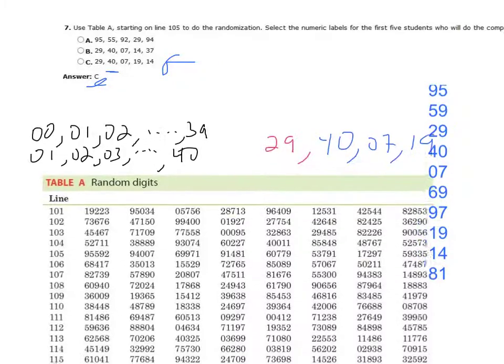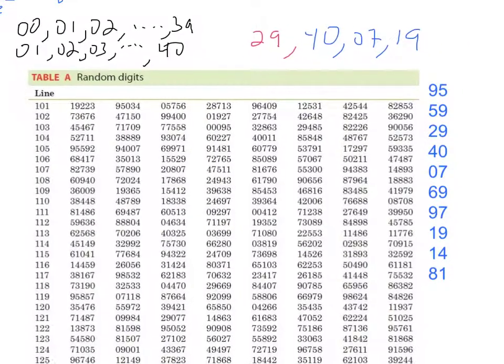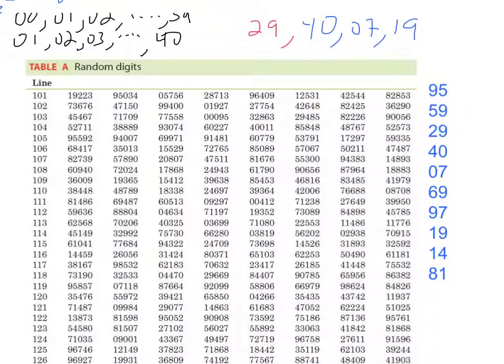What I did is I took row 105 and broke those numbers out into pairs of digits. What some people have a hard time doing is, what if I end up with a 2, and then I jump to the next line and grab the 9 for 29. It's perfectly alright.